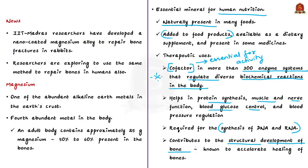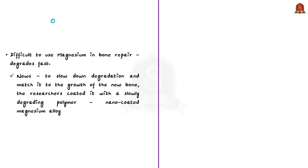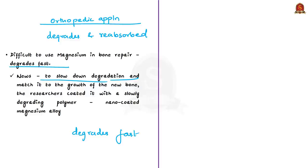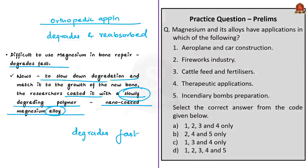Magnesium is a cofactor in more than 300 enzyme systems that regulate diverse biochemical reactions in the human body. A cofactor is a substance whose presence is essential for enzyme activity. So magnesium helps in protein synthesis, muscle function, nerve function, blood glucose control, and regulation of blood pressure. It is required for synthesis of DNA and RNA, contributes to structural development of bone, and accelerates healing of bones. Alloys of magnesium are considered a good option for orthopedic applications because magnesium is biocompatible, biodegradable, and has mechanical properties closer to bone. To slow down degradation and match it to growth of new bone, researchers coated it with a slowly degrading polymer. This is what is referred to as nano-coated magnesium alloy.